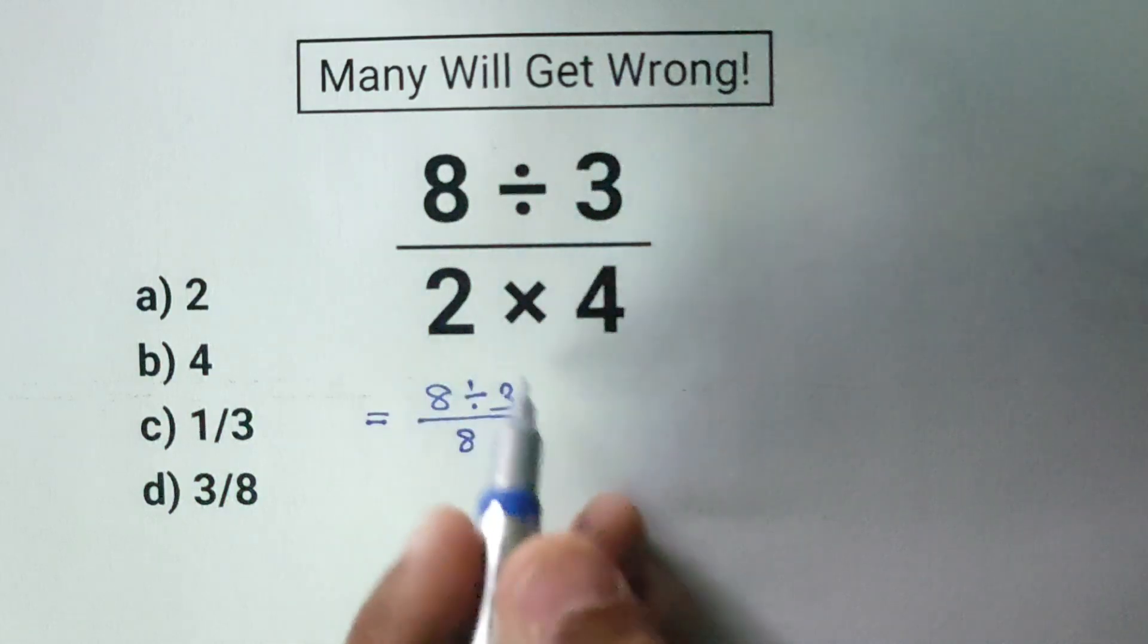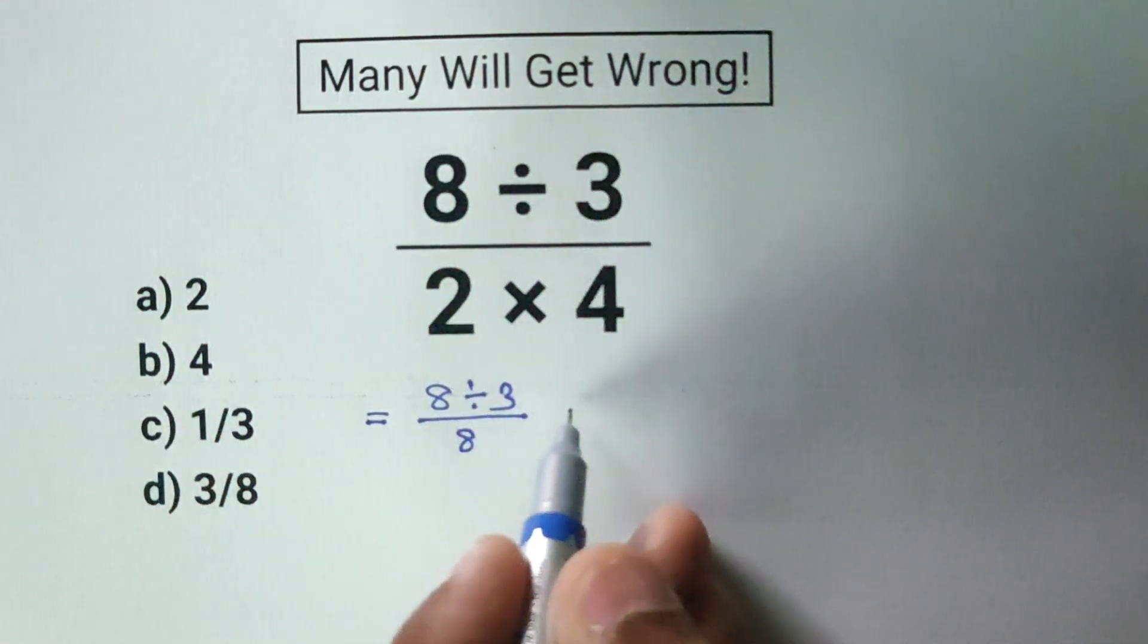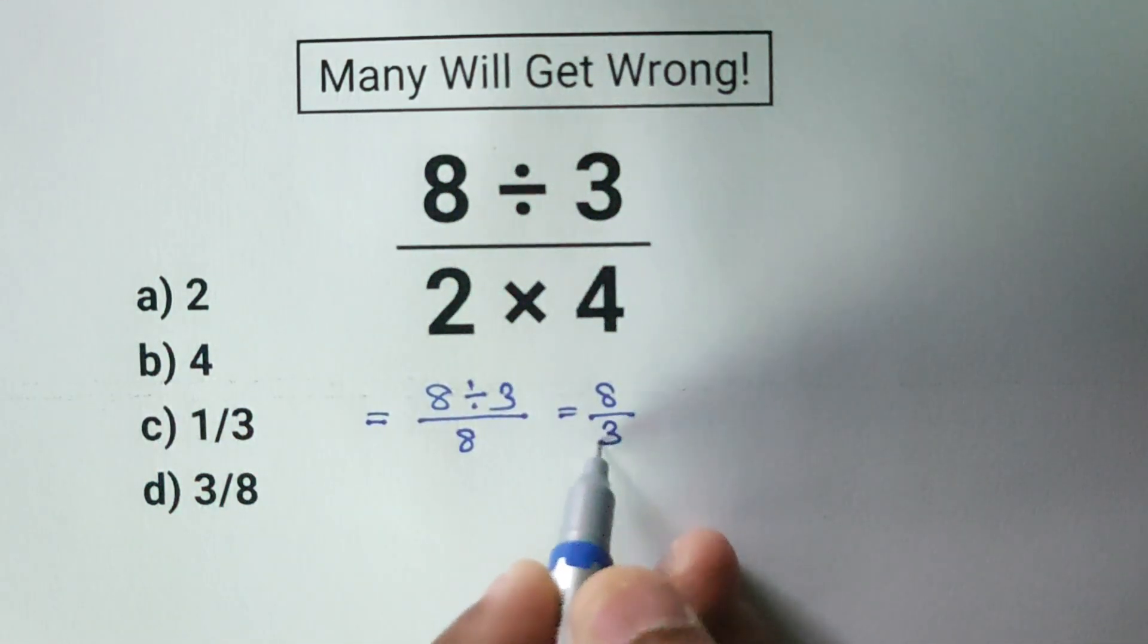So the expression now looks like this: 8 divided by 3, all divided by 8. Now let's rewrite 8 divided by 3 as a fraction: 8 divided by 3.